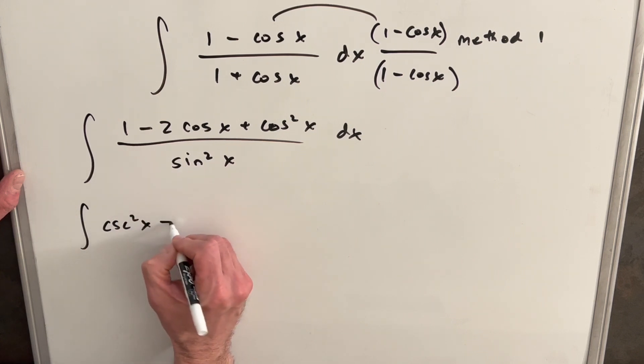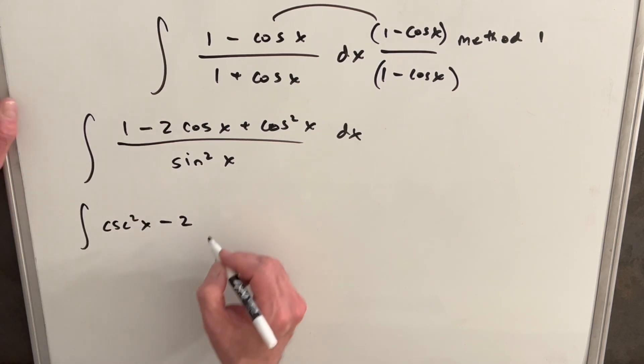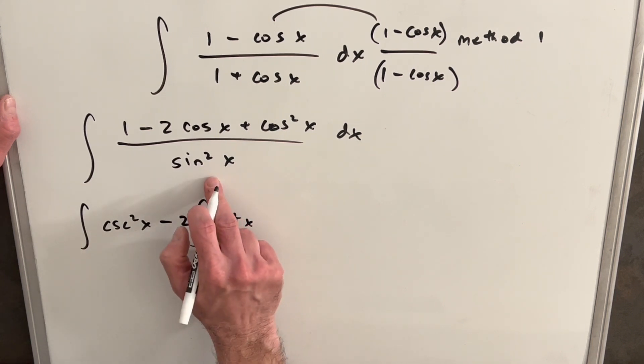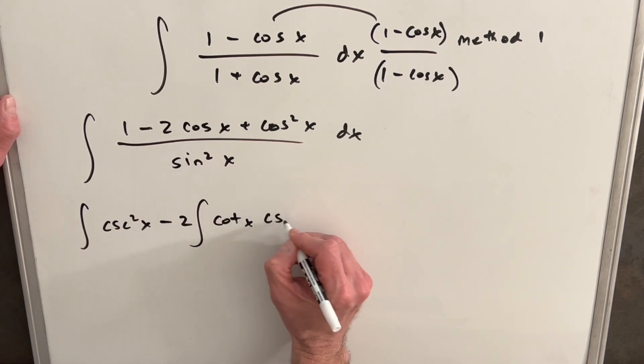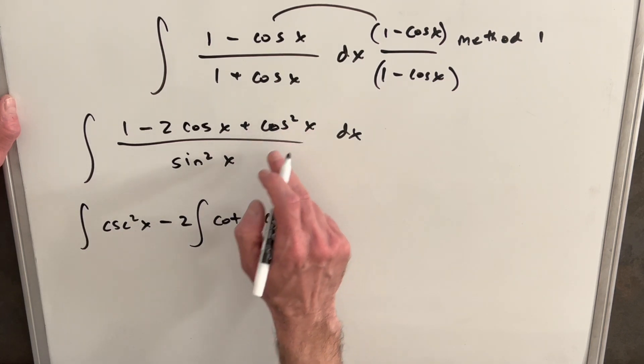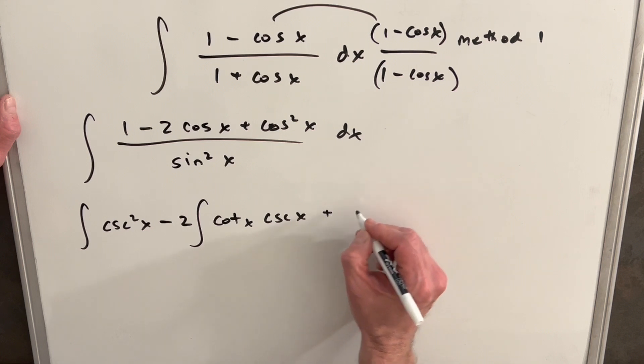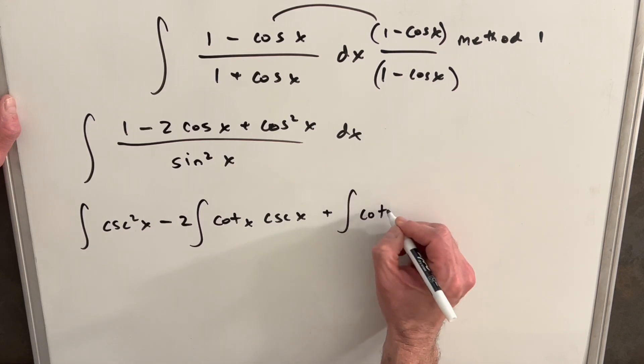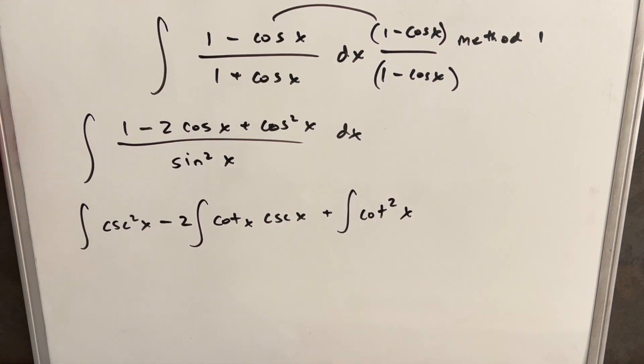For our second term, we're going to pull minus 2 out front, and we're going to have the integral cos x over sin is going to be cot x, but then we have an extra sin left over, so that's going to give us a csc x. And then for this last term, csc² over sin² is going to be just a cot² x.